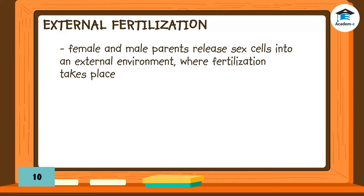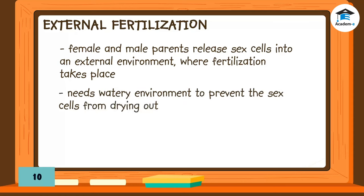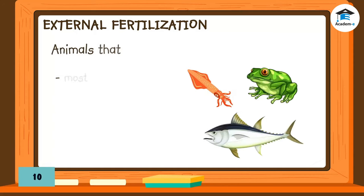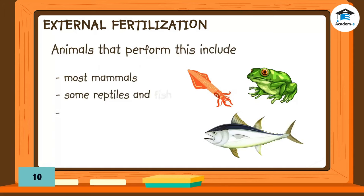External fertilization happens when the female and male parents release their sex cells into an external environment where fertilization takes place. It usually occurs in water to prevent the sex cells from drying out. Frogs and most fish, crustaceans, mollusks, and squid undergo external fertilization.